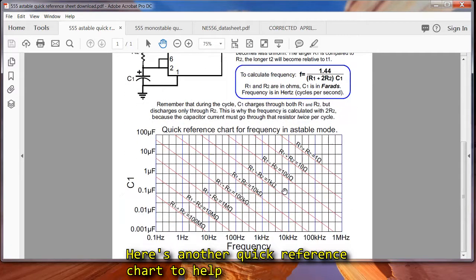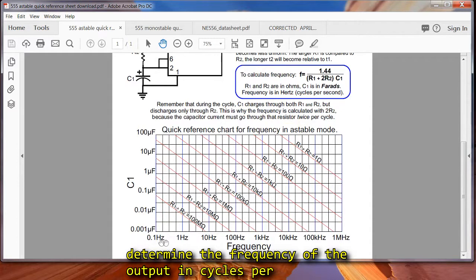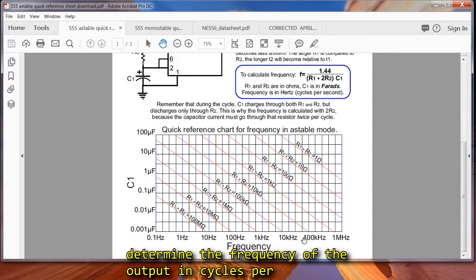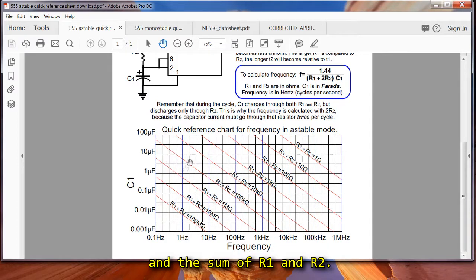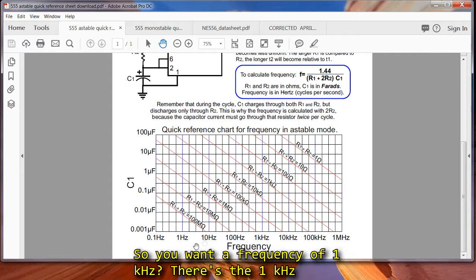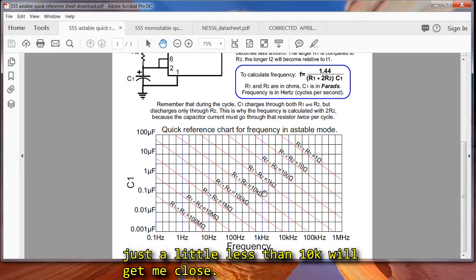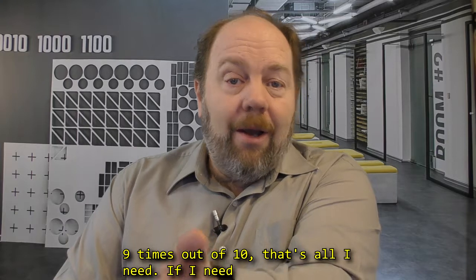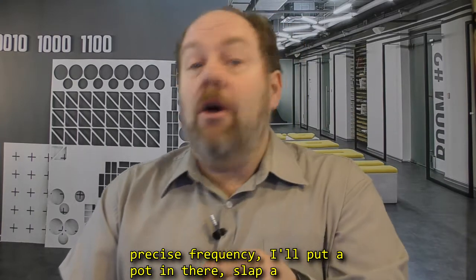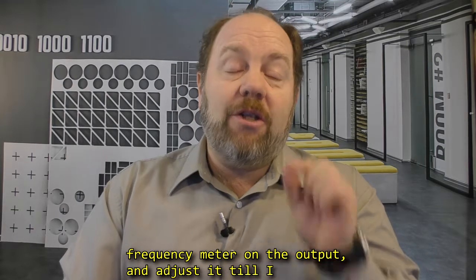So here's another quick reference chart to help determine the frequency of the output in cycles per second relative to the capacitor value and the sum of R1 and R2. So you want a frequency of 1 kHz. There's the 1 kHz line, a capacitor of 0.1 microfarads, and a total resistance of just a little less than 10 kHz will get me close. Now again, I must emphasize, this is approximate. 9 times out of 10, this is all I need. If I need precise frequency, I'll put a pot on there, and I'll slap a frequency meter on the output and adjust it until I get what I need.